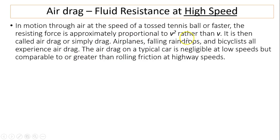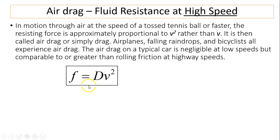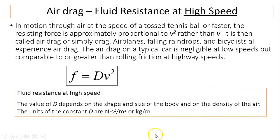Air drag — fluid resistance at high speed. For motion through air at a speed of a tennis ball or faster, the resistance force is approximately proportional to v² rather than v; it is then called air drag, or simply drag. Airplanes, falling raindrops, and bicyclists all experience air drag. The air drag on a typical car is negligible at low speed but comparable to or greater than rolling friction at highway speed. The relationship for high speed is f = D times v². The direction of f is always opposite of v. The constant D depends on the shape and size of the body and the density of the air; its units are N·s²/m² or kg/m.